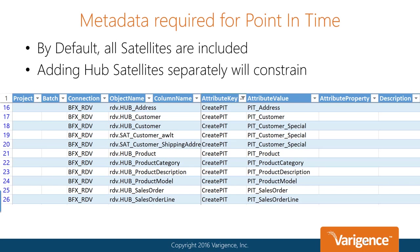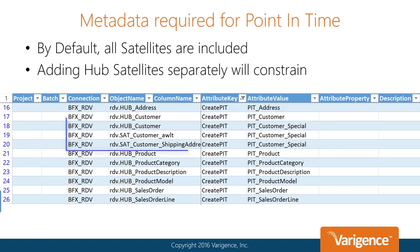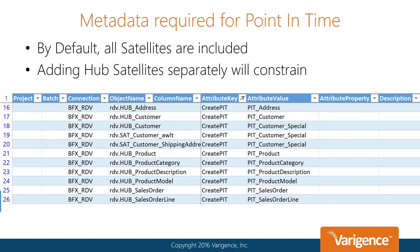The BimlFlex metadata for a point-in-time table is stored and viewed in the attributes sheet. A point-in-time table can either be specific for the hub, meaning all attached satellites will be included in the table, or for the hub and a specific subset of the satellites that should be included. For the connection to the data vault and the relevant object names, add the attribute key, create bit, and enter the point-in-time table name in the attribute value.